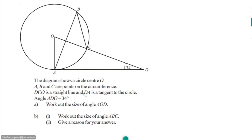Now we have a diagram showing center O, with A, B, C as points on the circumference. DCO is a straight line, and DA is a tangent to the circle. Angle ADO is 34 degrees, and we need to work out angle AOD. Since this is a radius meeting a tangent, the angle between them is always 90 degrees. So in the triangle, we have 90 plus 34 plus angle AOD equals 180.